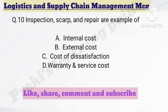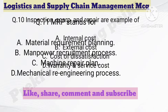Question number 10. Inspection, scrap, and repair are examples of — Option A: Internal cost. Option B: External cost. Option C: Cost of dissatisfaction. Option D: Warranty and service cost. The correct answer is option A — internal cost.